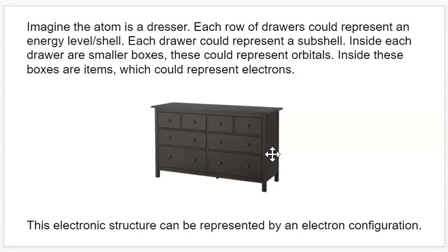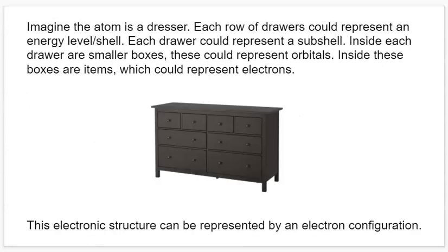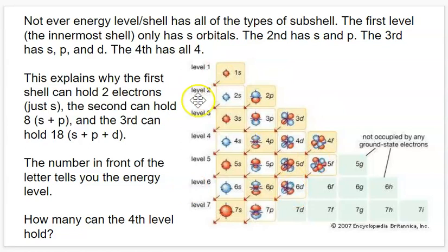There is something called an electron configuration, which is basically like an address that shows where all of the electrons are — it condenses this idea into something easy to communicate. An electron configuration is a way to show the electronic structure as a code with three components: energy levels denoted by numbers, subshells denoted by letters, and the number of electrons in each subshell denoted by superscripts. The notation is energy level then a letter — either S, P, D, or F — and then a little exponent showing how many electrons are in that subshell.